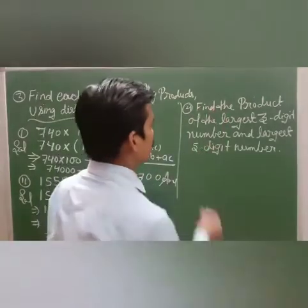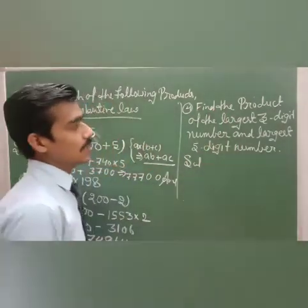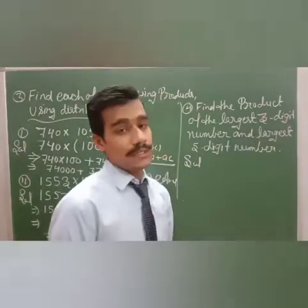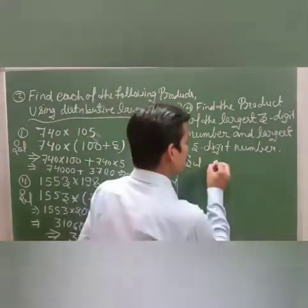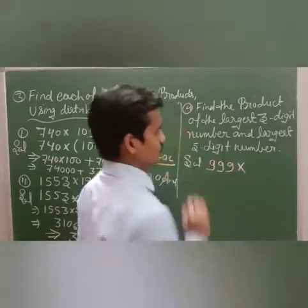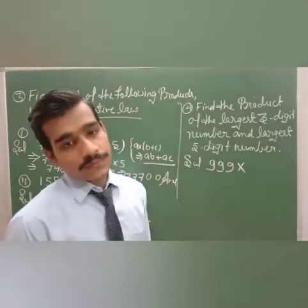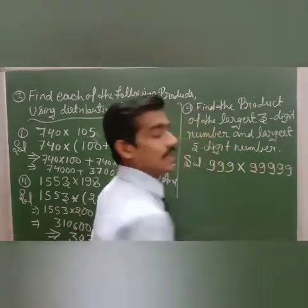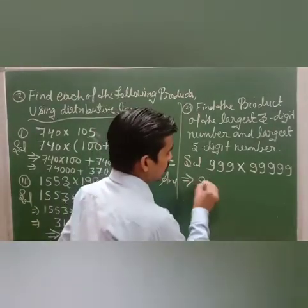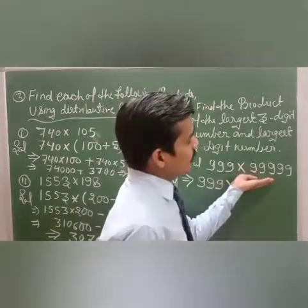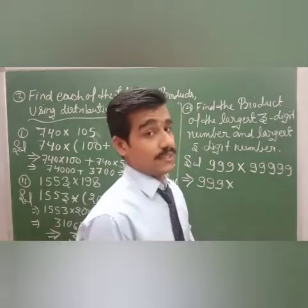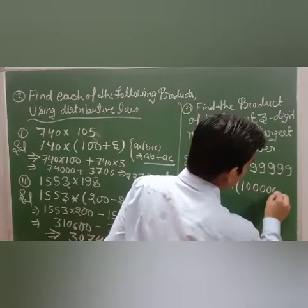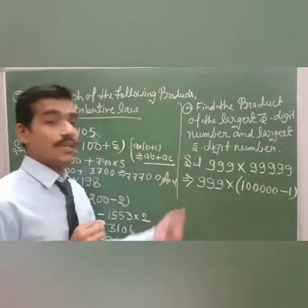Question 4: Find the product of the largest 3-digit number and the largest 5-digit number. The largest 3-digit number is 999 and the largest 5-digit number is 99,999. Since 999 is nearest to 1000, write it as 1000 minus 1, and using the distributive law.